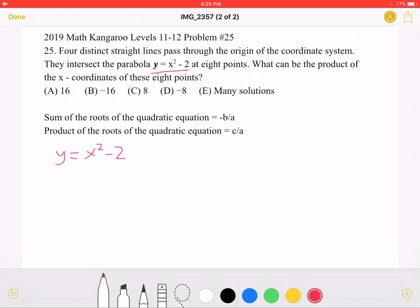And we have four straight lines which pass through the origin and intersect this parabola. Because they are lines that pass through the origin, they must have the form y equals mx. And we are looking for the product of the x coordinates of the intersection points.